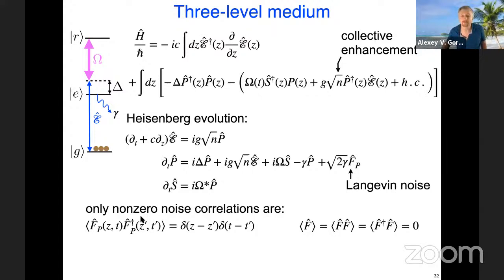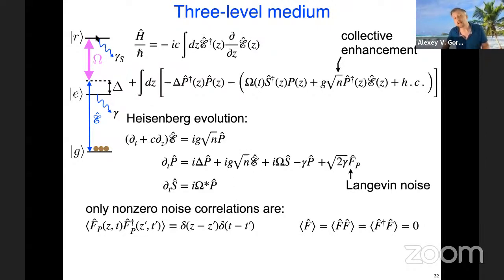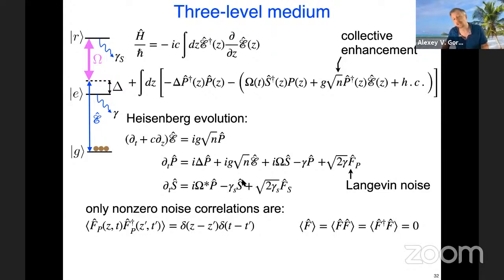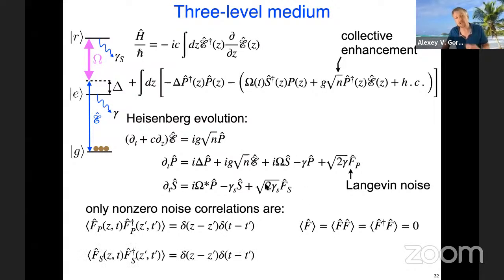Similarly, the high-lying Rydberg state r has a long but finite lifetime with decay rate gamma_s. This adds a decay term to the S equation along with a similar Langevin noise operator with analogous noise correlations where only the corresponding F_s F_s-dagger correlator is nonzero. These noise terms will not play a role for the particular calculation we're doing.